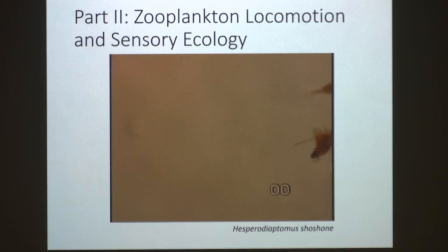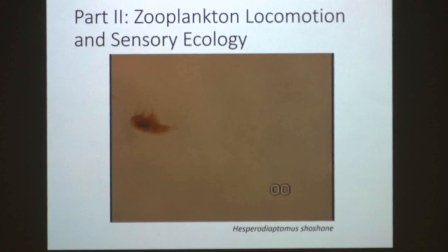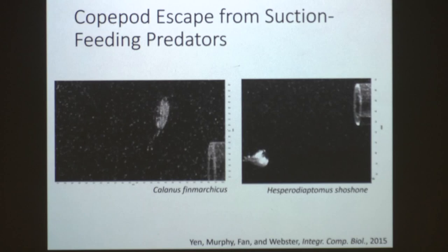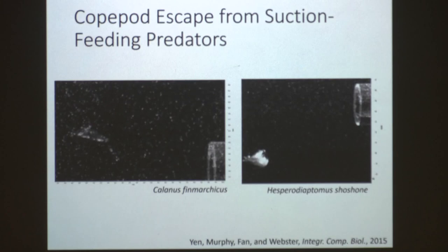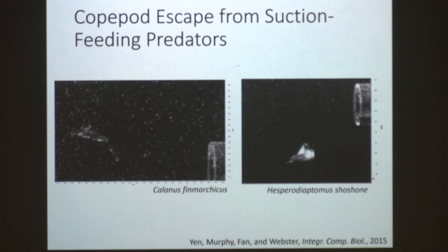Zooplankton ecology is really tied to locomotion and animal sensory capabilities. I looked at a variety of projects in this area, including Hesperodiaptomus shoshone, a copepod found in high mountain lakes in the Rockies. We also looked at copepods and how they escape from suction-feeding predators such as fish. Calanus are really good at escaping, whereas Hesperodiaptomus shoshone lives in fishless lakes and is not particularly good at escaping.